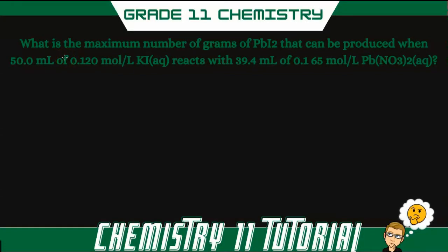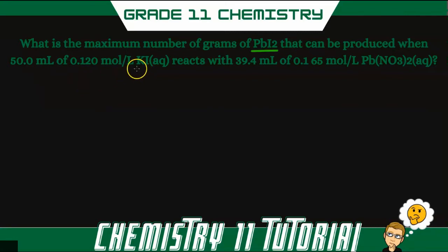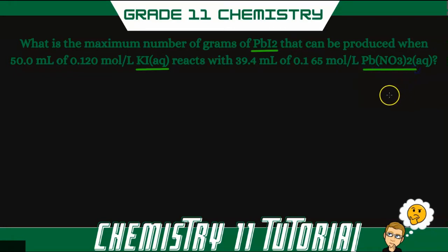Welcome back to Physics Teacher. In this grade 11 chemistry tutorial, I'm going to go over a stoichiometry problem that involves the concentrations of solutions. The question asks: what is the maximum number of grams of lead iodide that can be produced when 50 milliliters of 0.120 moles per liter of potassium iodide reacts with 39.4 milliliters of 0.165 moles per liter of lead nitrate?